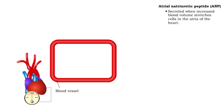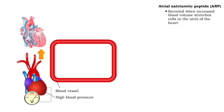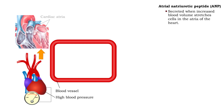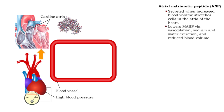ANP has the opposite regulating effect to the RAA system and ADH. It helps bring high levels of blood pressure and blood sodium down. When high blood volume stretches cells in the atria of the heart,